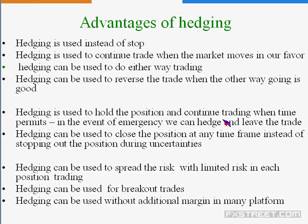Hedging can be used to hold the position and continue trading when the time comes. In the event of an emergency you can just hedge the position and leave the trade. Even after a few hours you can come back and attend to it. Emergency is common — there is no hard and fast rule. Without hedging, people either close positions prematurely or leave positions open and come back to find the market has gone 300-400 pips against them. Using hedging, you can simply hedge the position and go, or keep a hedging order to limit the risk.